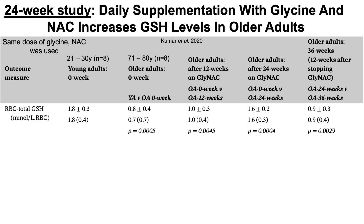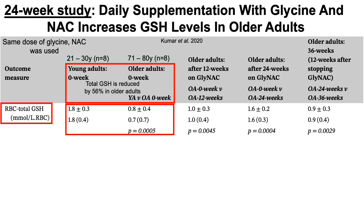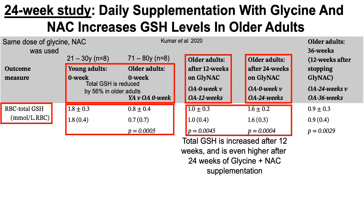In the 24-week study using the same doses, red blood cell glutathione levels were measured in young adults versus older adults. Older adults again had lower levels — 0.8 versus 1.8 in young adults. Only older adults were supplemented. After 12 weeks, glutathione rose to 1.0, and after 24 weeks to 1.6 — essentially doubling glutathione levels.